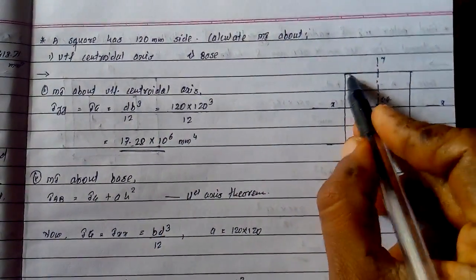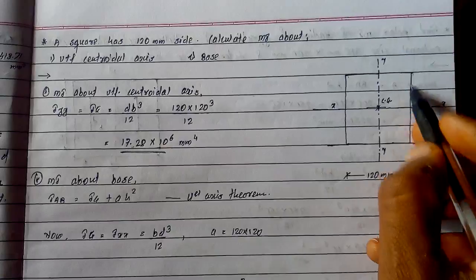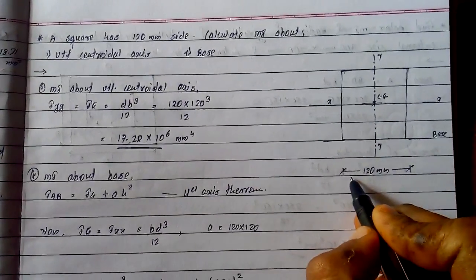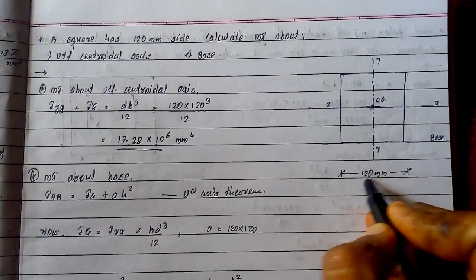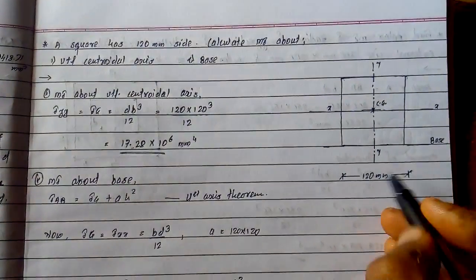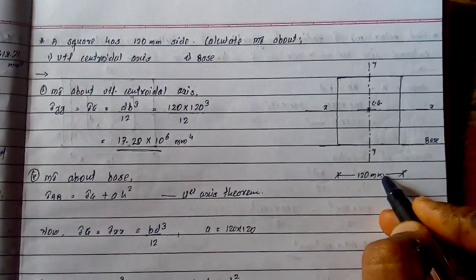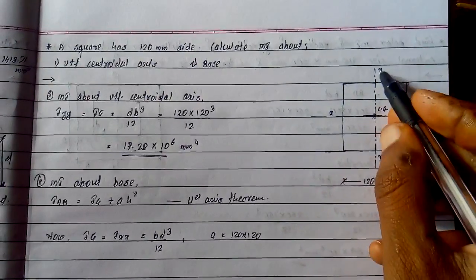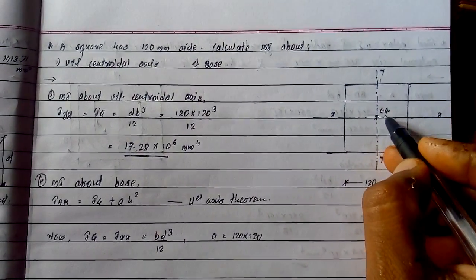The given square section has side of 120mm. Since it's a square, all sides are same, 120mm each. We have the xx axis, yy axis, and the center of gravity CG.